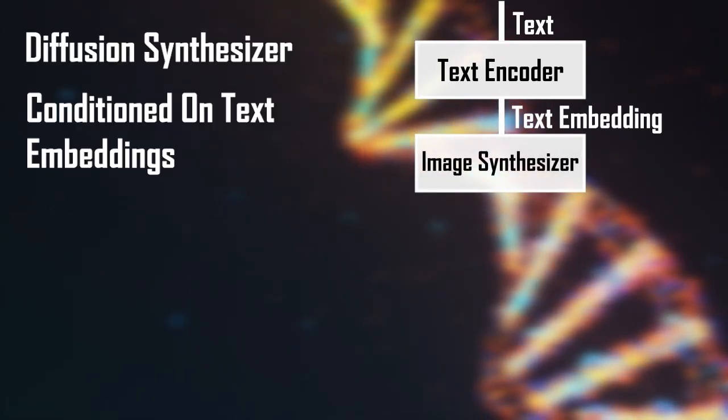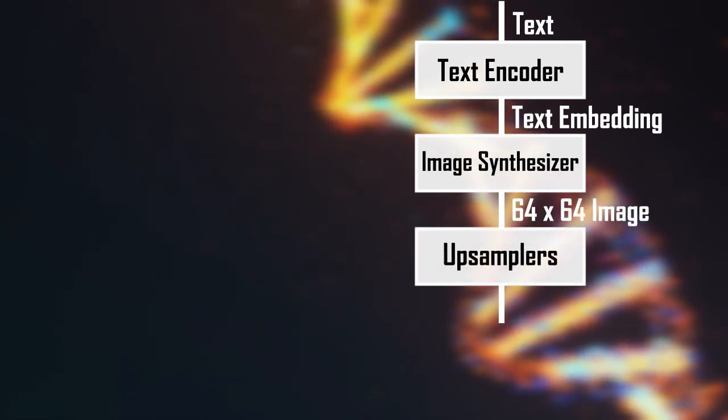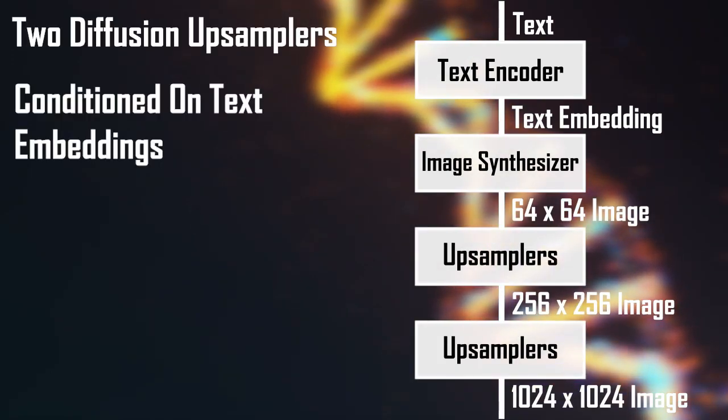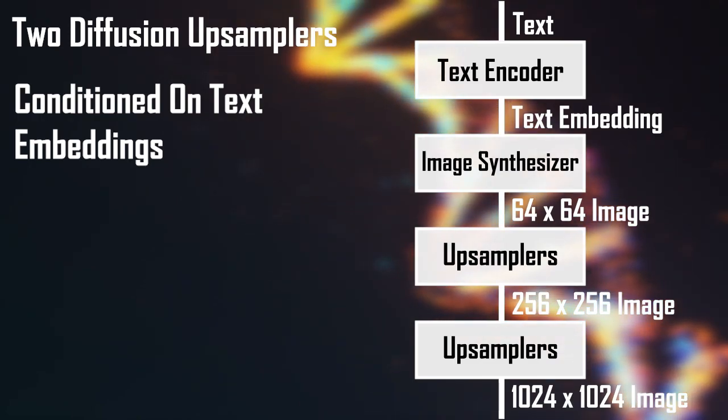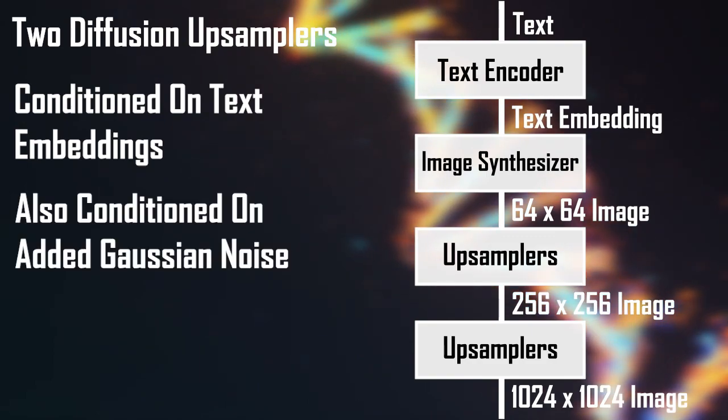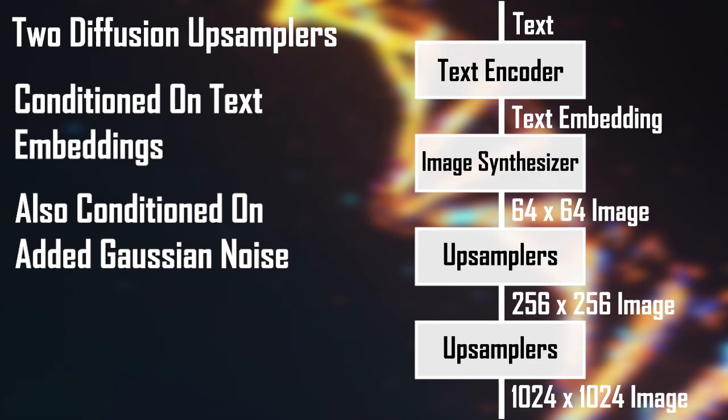Conditioned on these embeddings, a diffusion model generates the final low-resolution image, which is then pushed through two text-conditioned diffusion upsamplers to improve the resolution of the final image. But apart from this text conditioning, final upsamplers are also conditioned on Gaussian noise added to the synthesized image at the synthesizing stage.